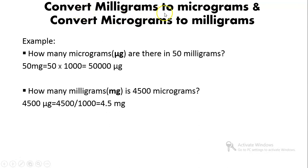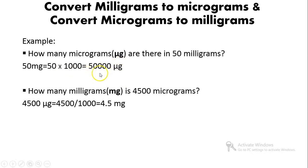To convert milligrams to micrograms and micrograms to milligrams: First example — to convert 50 milligrams to micrograms, multiply by 1000: 50 times 1000 equals 50,000 micrograms. Second example — how many milligrams is 4500 micrograms? To convert microgram to milligram, divide by 1000: 4500 divided by 1000 equals 4.5 milligrams.